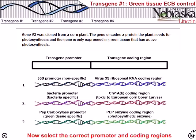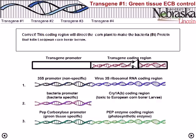We need to select one gene for the transgenic promoter and another for the transgene coding region. We need to encode the toxic material dangerous for the corn borer larva, so we must take gene two as the transgene coding region. The 35S promoter is non-specific and not needed here, and a bacterial promoter is also not appropriate.